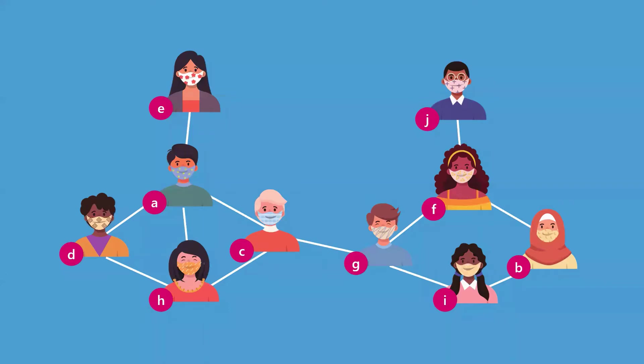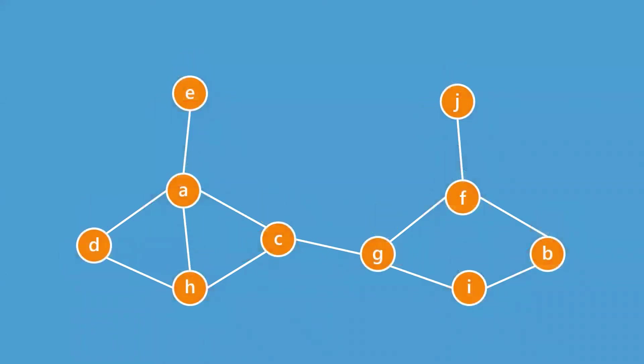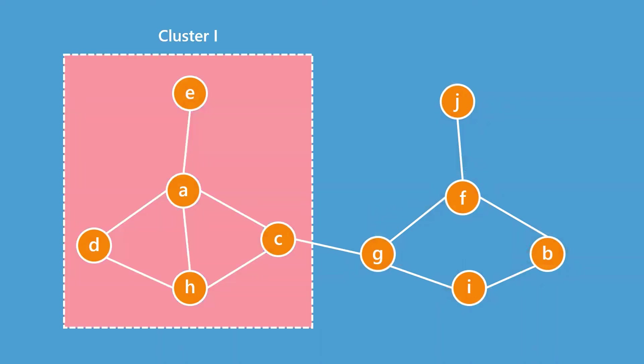Focusing just on the contact between them reveals that these 10 suspects can be divided into two groups: two infection clusters, cluster one and cluster two.